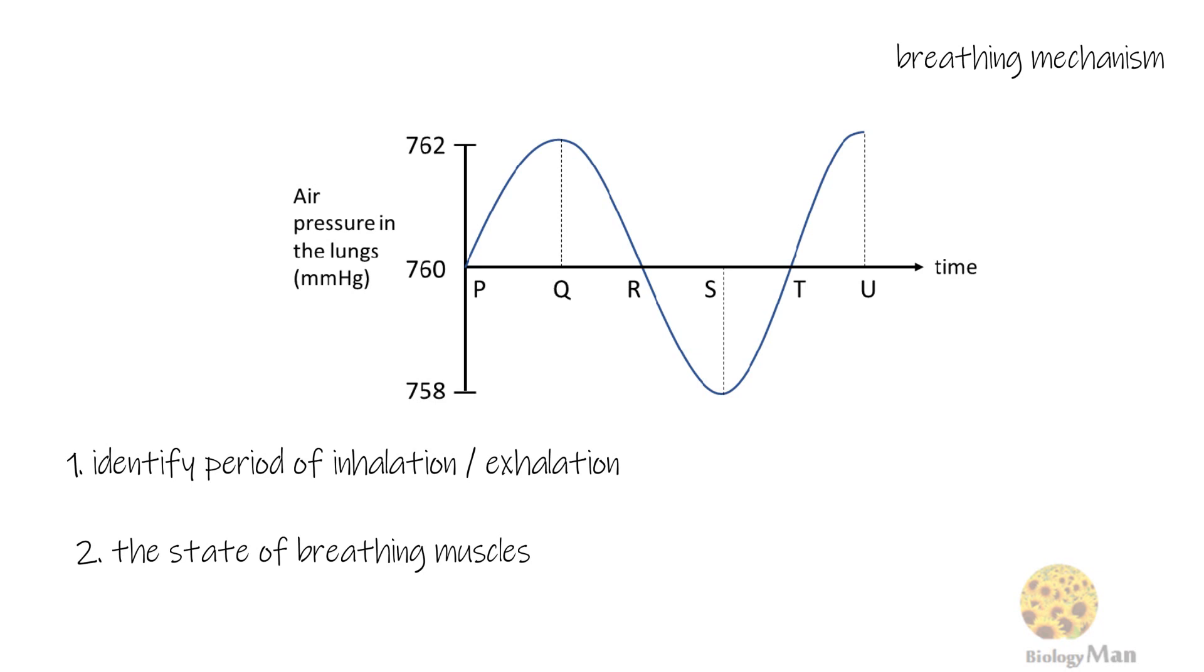Let's take a look at the first common type of questions. The y-axis is the pressure in the lungs in mmHg, whereas mmHg is the unit of pressure. The x-axis shows the time. Pay attention to the unit of time in the graph.